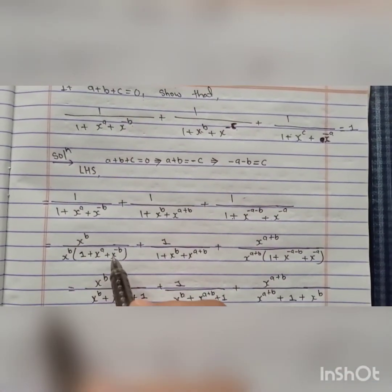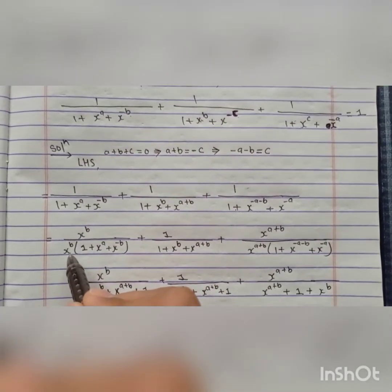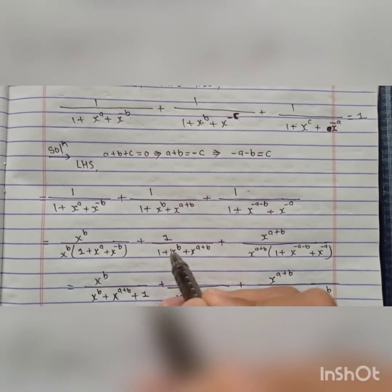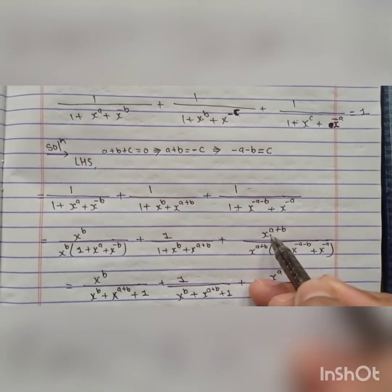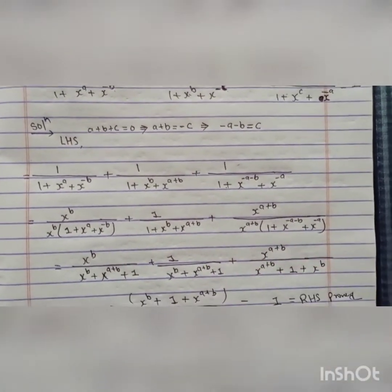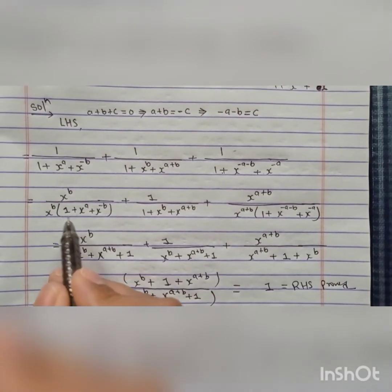Now if we see here x to the power b, multiply numerator and denominator by x to the power b. Here we have to do nothing. In this term, we have to multiply numerator and denominator by x to the power a plus b.